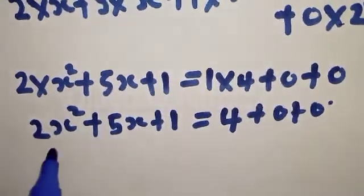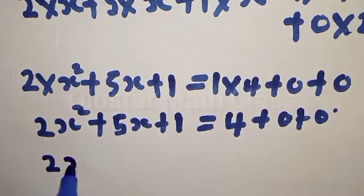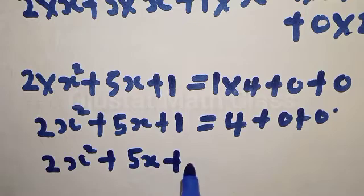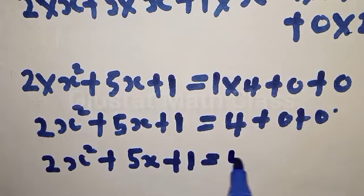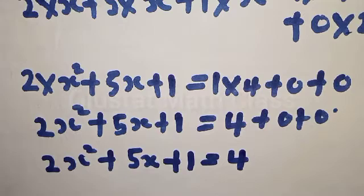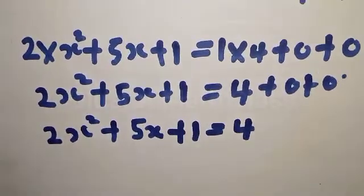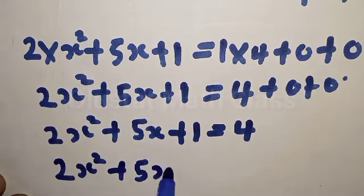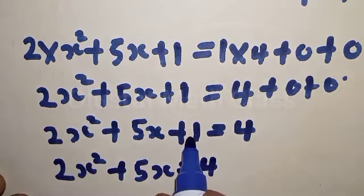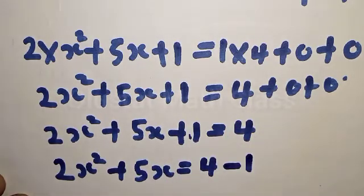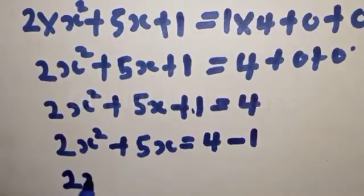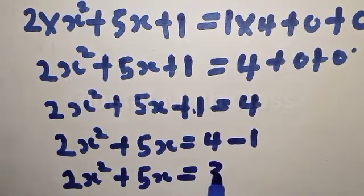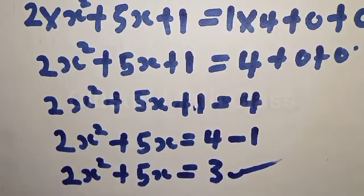Now we have — this can be written as — 2X squared plus 5X plus 1 should be equal to 4. Now this tends to a quadratic equation. We have 2X squared plus 5X equal to 4. If the 1 crosses to the other side it becomes minus 1, then we have 2X squared plus 5X equal to 3. That is our quadratic equation.